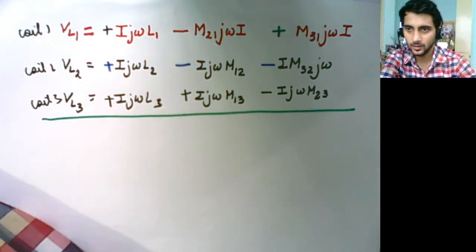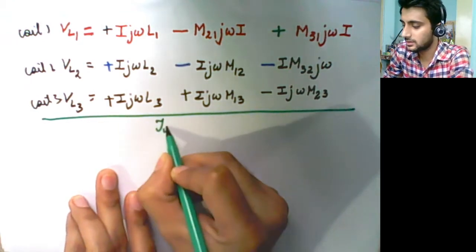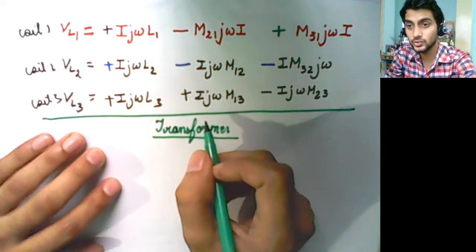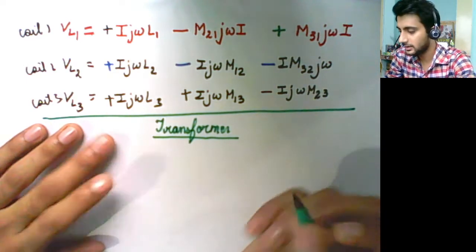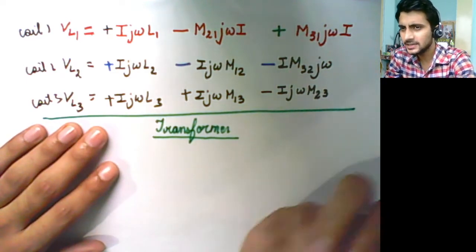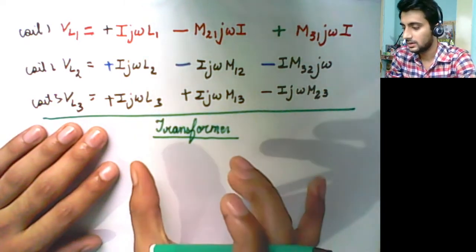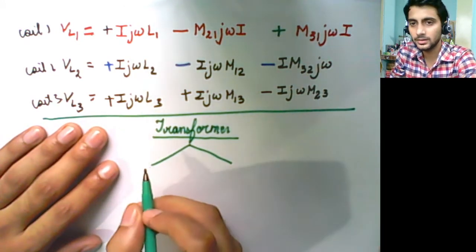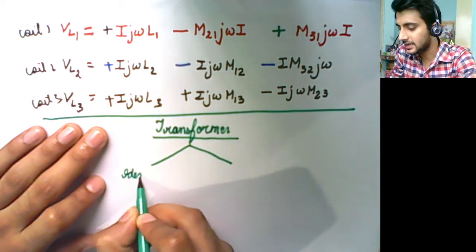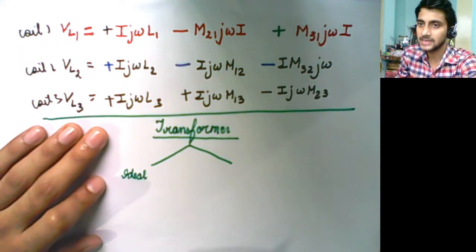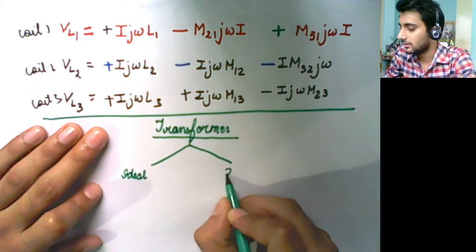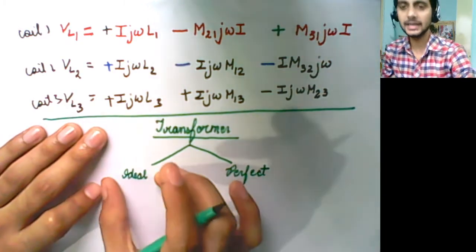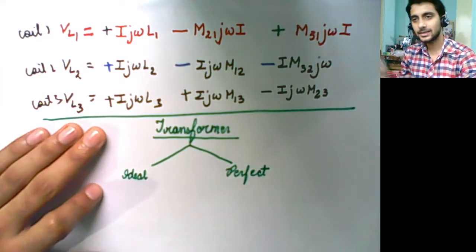Welcome back. Now we will discuss about transformers because transformers also have mutually coupled circuits, and it becomes important to understand transformers in detail — at least have an eagle-eye view of the working of a transformer. In this class we will focus more on understanding what is an ideal transformer and what is a perfect transformer. So there are two types of transformers which we have to learn: ideal transformer and perfect transformer.